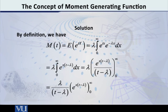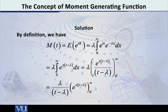We start from the basic definition. M of t, the MGF, is the expected value of e raised to tx. Since this is a continuous distribution, the expected value of e raised to tx will be given by the integral from 0 to infinity of e raised to tx into f of x dx, and f of x itself is lambda into e raised to minus lambda x.